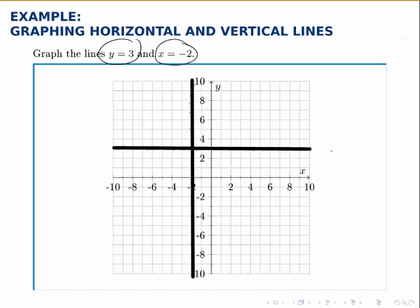So in general, a horizontal line has the form y equals some number, in this case 3, and a vertical line has the form x equals some number, in this case negative 2.